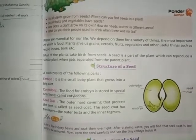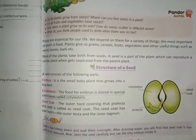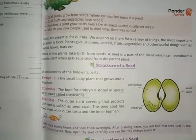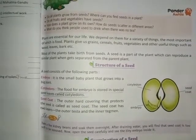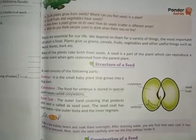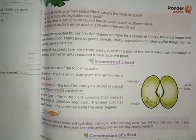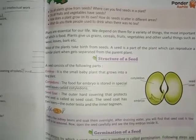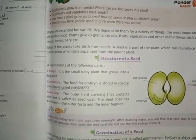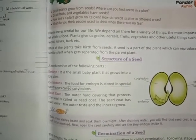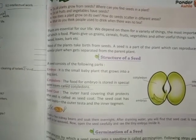Structure of seed — a seed consists of the following parts. Embryo: it is the small baby plant that grows into a big plant. Cotyledons: the food for the embryo is stored in special seed leaves called cotyledons.